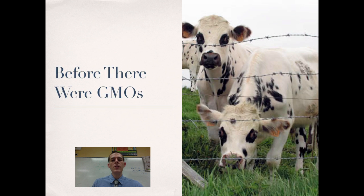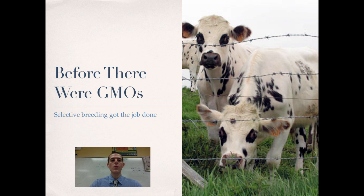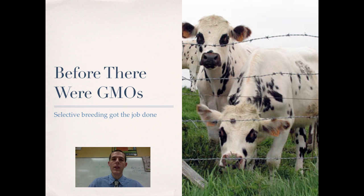Before we talk about GMOs, though, I want to talk about what there was before GMOs. Going way back to that mark about 10,000 years ago with the agricultural revolution, people realized that if I take two animals that have traits that I like and breed them together, their kids are probably going to have those traits. It's called selective breeding. So throughout agricultural history up until about 20, 30 years ago, that was the way that farmers got the traits that they wanted.